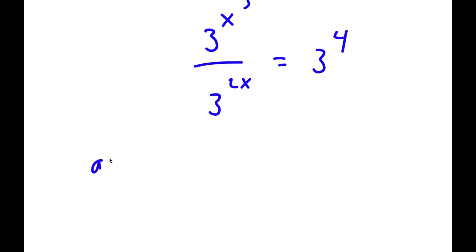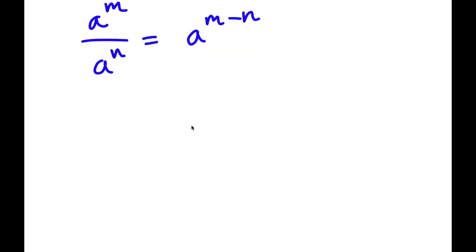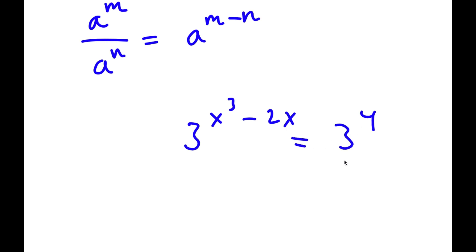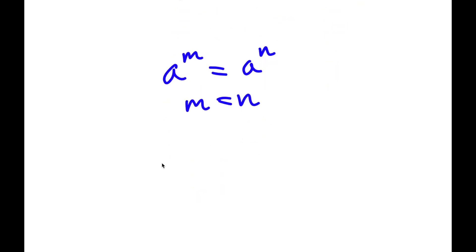Using the rule a^m over a^n equals a^(m minus n), 3^(x³) over 3^(2x) equals 3^(x³ minus 2x), which is equal to 3 to the power of 4. Since the bases are equal, if a^m equals a^n then m equals n. So in this case, x³ minus 2x is equal to 4.